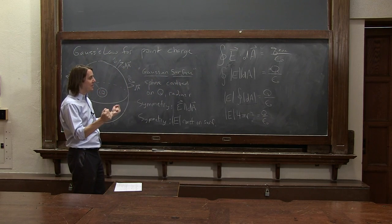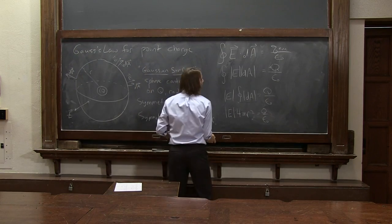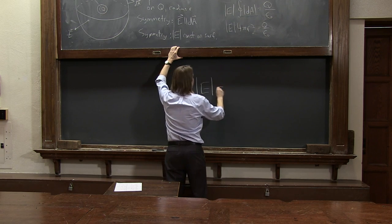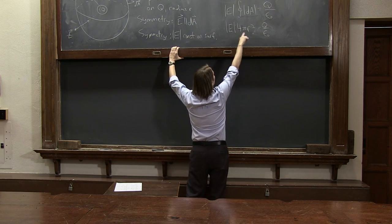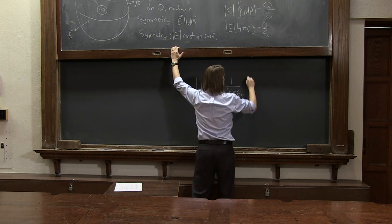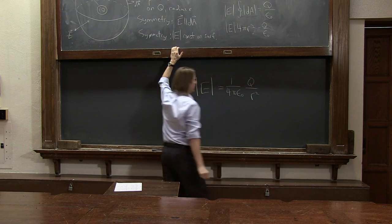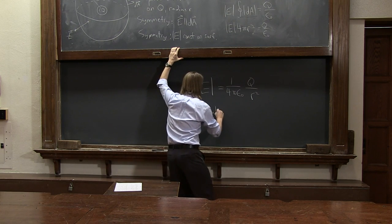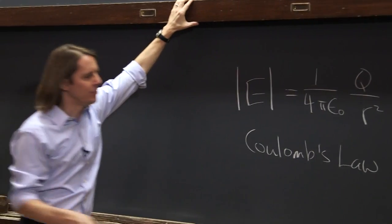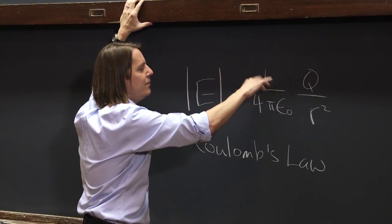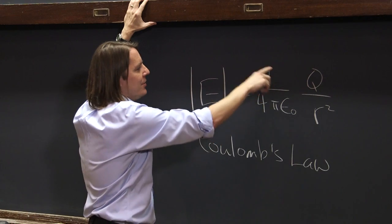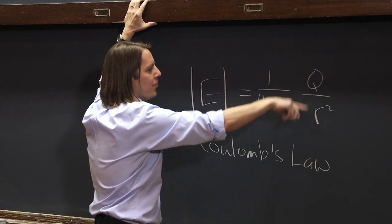And now the big ending. The magnitude of E equals 1 over 4 pi epsilon naught times Q over r squared. That's Coulomb's law. Ke is just the convenient way to write 1 over 4 pi epsilon naught, which equals 9 times 10 to the 9. But this is how you'll see it in many books: 1 over 4 pi epsilon naught, Q over r squared.